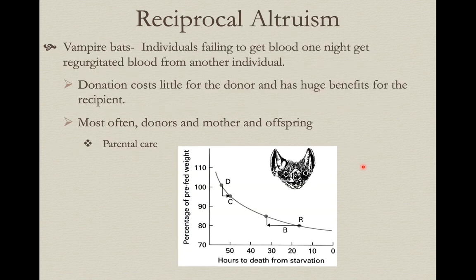Here's a classic example of reciprocal altruism in nature. Vampire bats live in colonies and fly out at night looking for mammals to feed on for a blood meal. When they return to the colony, some individuals found a big cow or dog and are full of blood, while other individuals in the colony didn't have a good night and haven't fed.